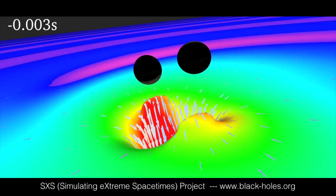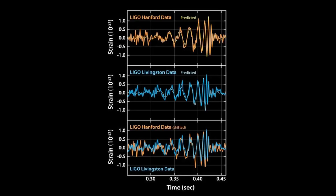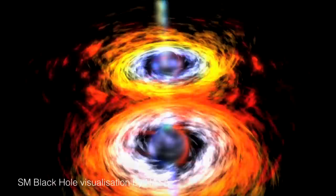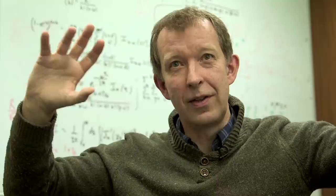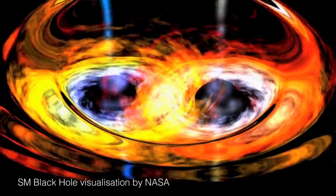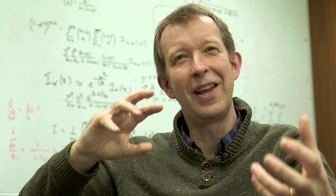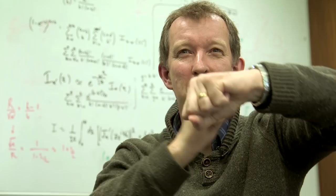Amazingly, just by looking at the kind of signal they detect — how the amplitude changes with time, how the frequency changes — they can learn a great deal. In this case, they're fairly confident one was a 29 solar mass black hole and the other was a 36 solar mass black hole, with uncertainties of one or two solar masses each. Those are the kinds of black holes which are probably the end states of very massive stars, though they are actually on the high side even for very massive stars.